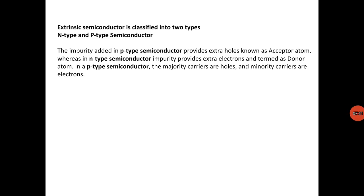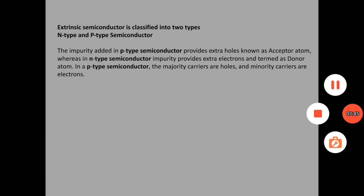Extrinsic semiconductor is classified into two types. First is N-type semiconductor and second is P-type semiconductor. The impurities added in P-type semiconductor provides extra holes known as acceptor atom. Whereas in N-type semiconductor, impurities provide extra electron and termed as donor atoms. In a P-type semiconductor, majority carriers are holes and minority carriers are electrons. And in N-type semiconductor, majority carriers are electrons and minority carriers are holes.